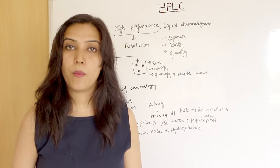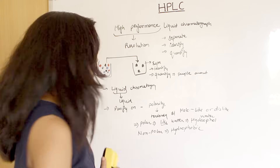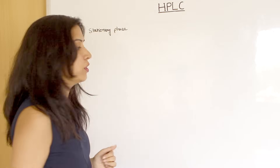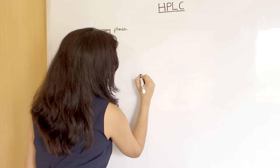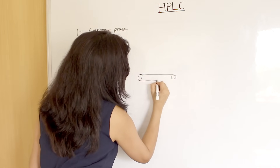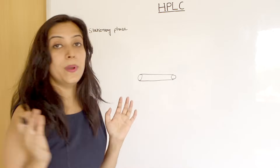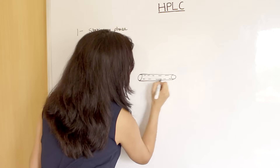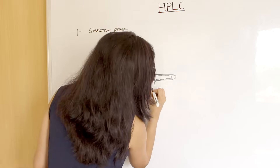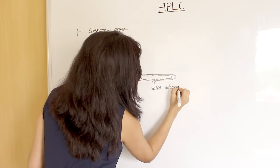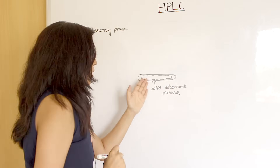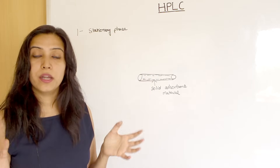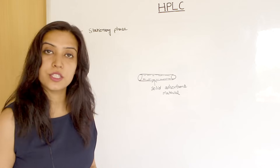Next, we will see what the main components are and the principle. First, what is the stationary phase? If you look at the instrumentation of HPLC, there is a column which is a tube-like structure. In that column, there is a solid absorbent material filled, which is properly packed. It is very necessary to be packed so that the purification can be very good.